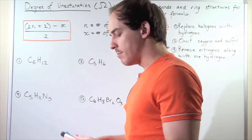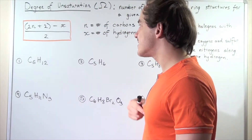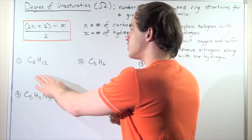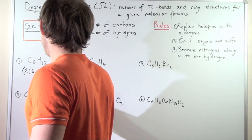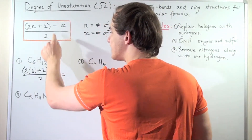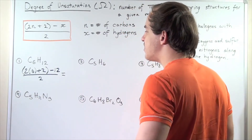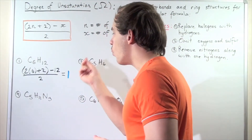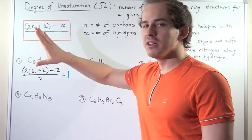In example one, we have six carbons so n = 6, and 12 hydrogen atoms so x = 12. Applying the formula: (2×6 + 2 - 12) / 2 = (14 - 12) / 2 = 2 / 2 = 1. So the degree of unsaturation for compound one is 1, meaning we either have one pi bond or one ring structure in this compound.